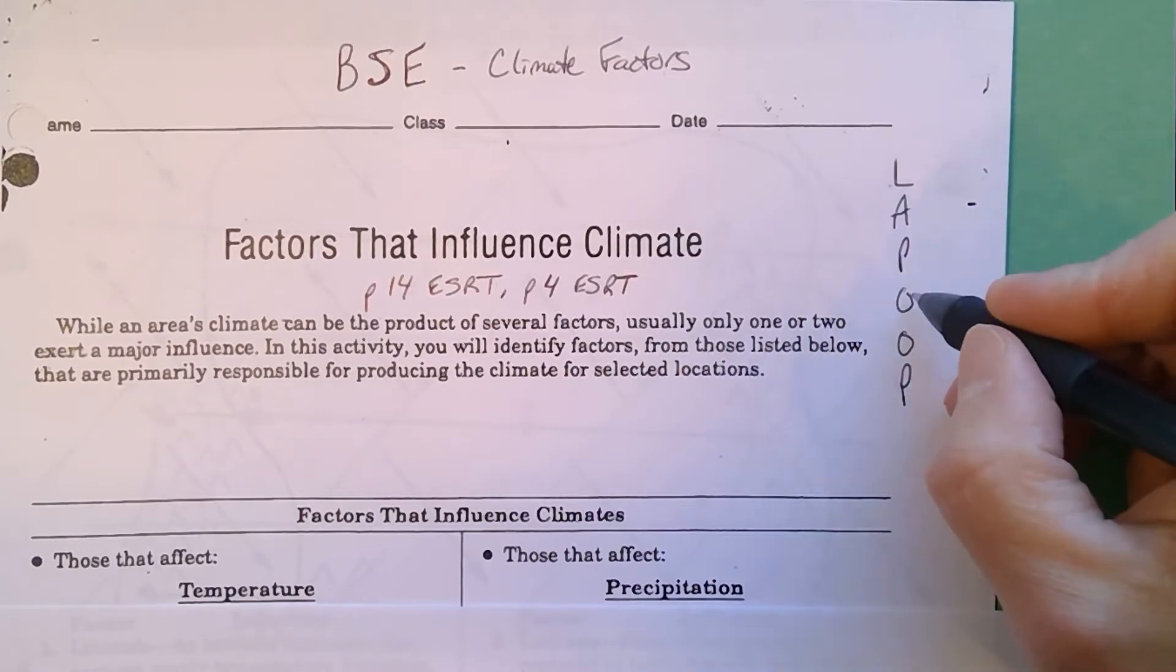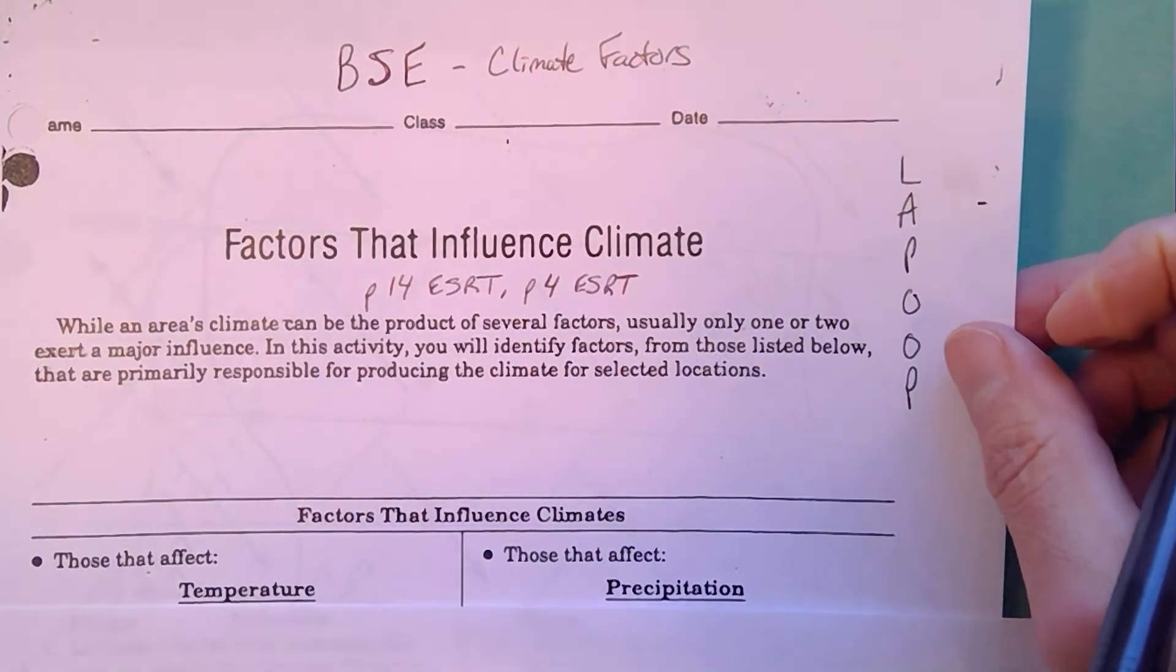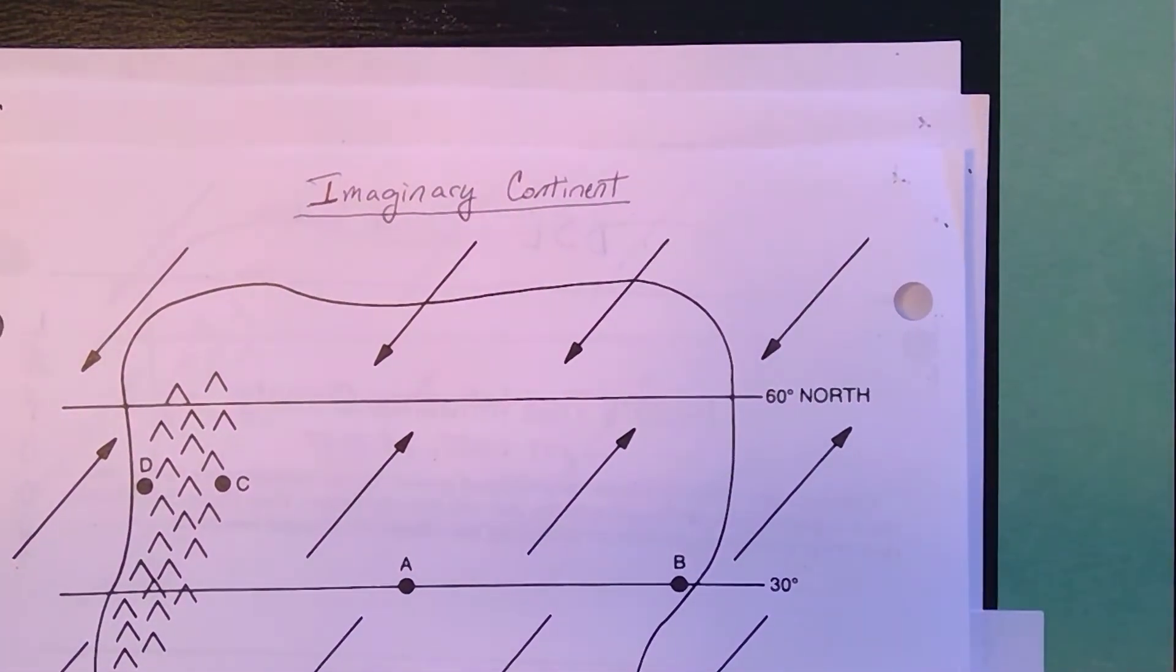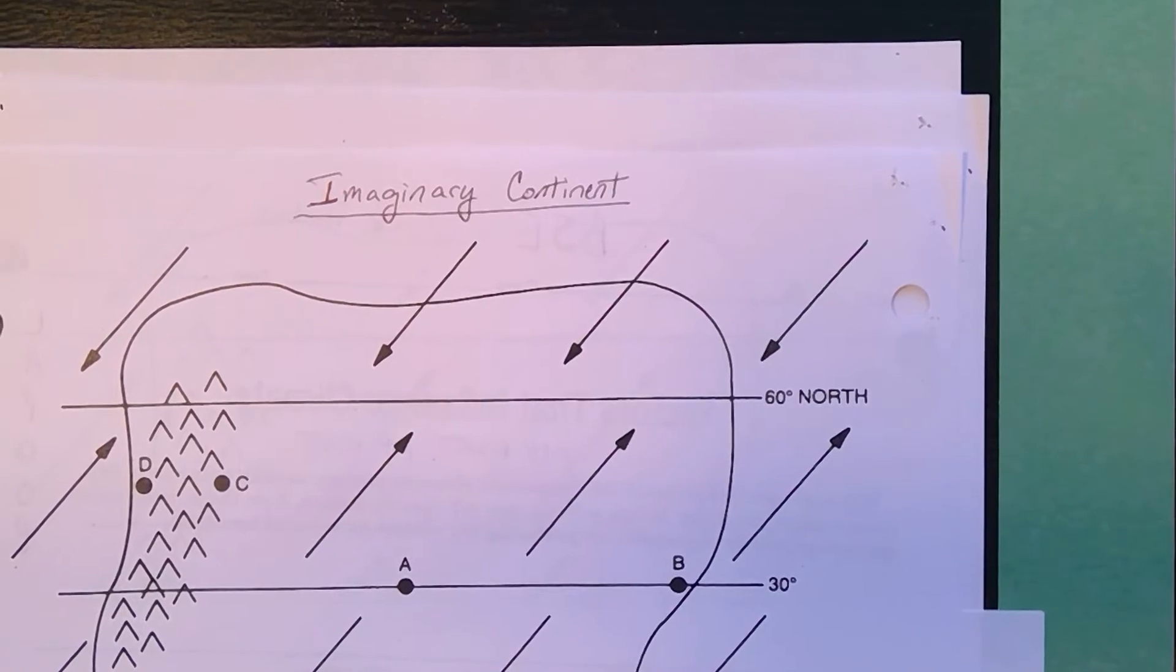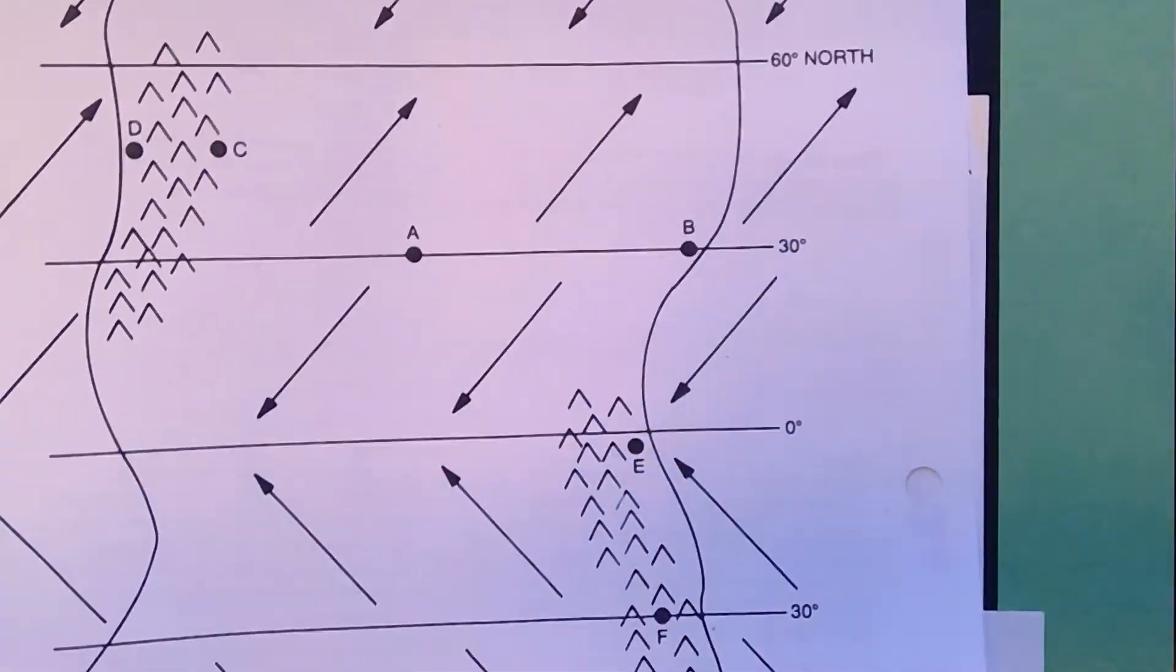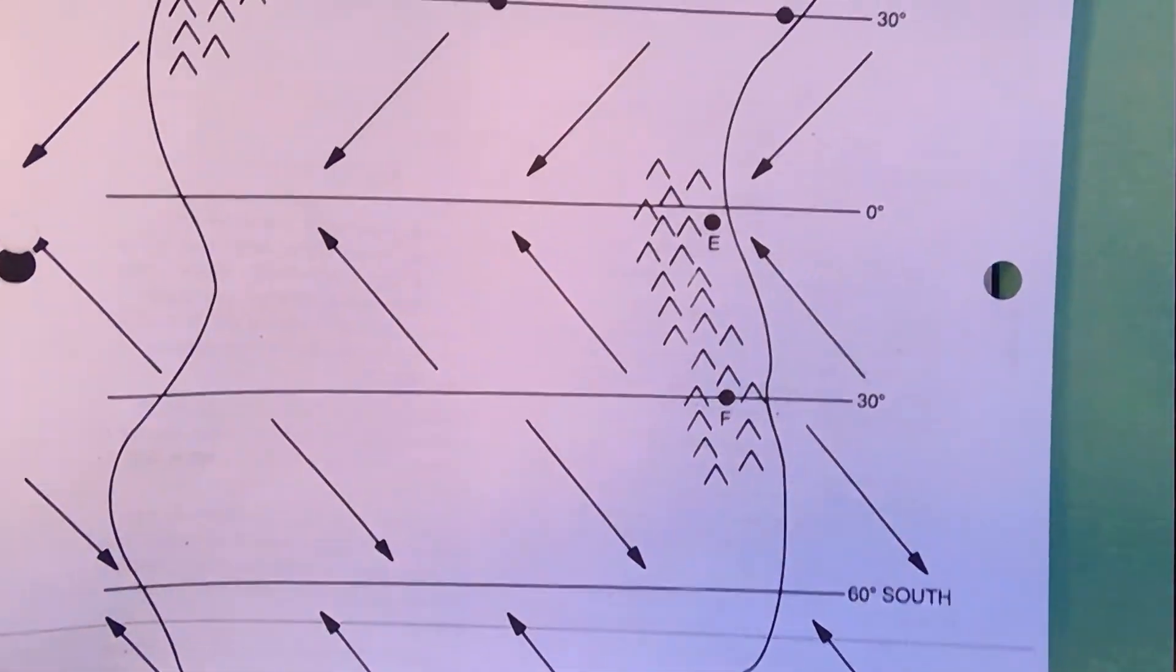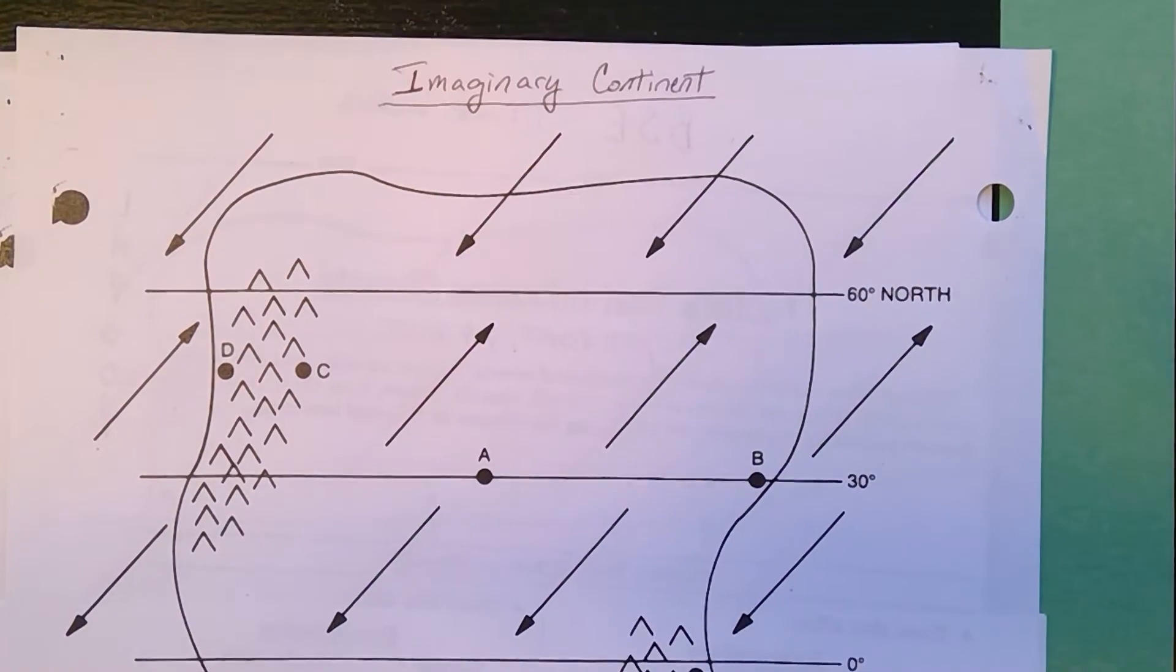That's really most of the factors they're going to describe, and the way they're usually going to ask about this is with something known as an imaginary continent group. On the back of the sheet, you've got your typical imaginary continent. It's usually sort of an amoeba-shaped continent, sort of like a supercontinent like Pangea that goes all the way from the southern hemisphere back down to the northern hemisphere.